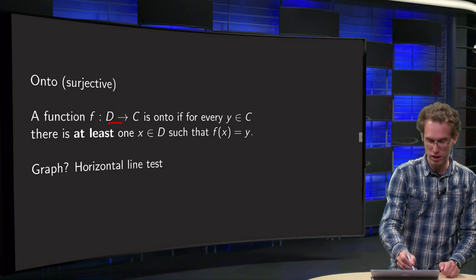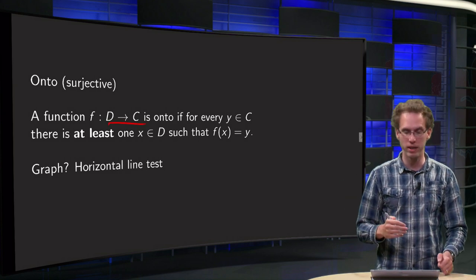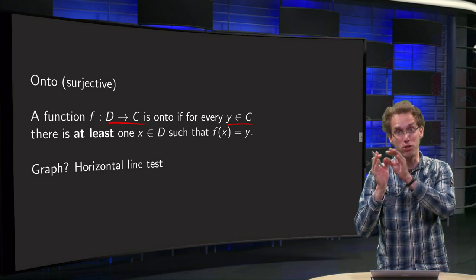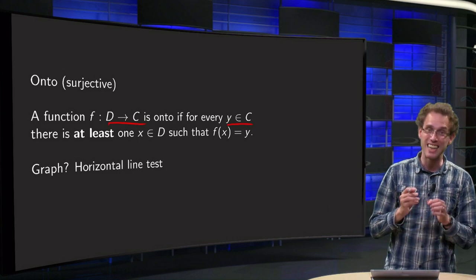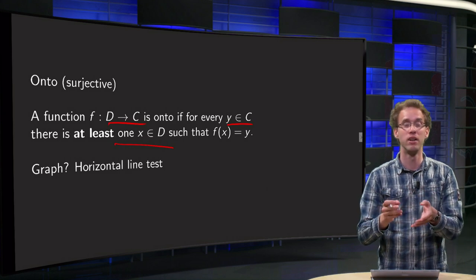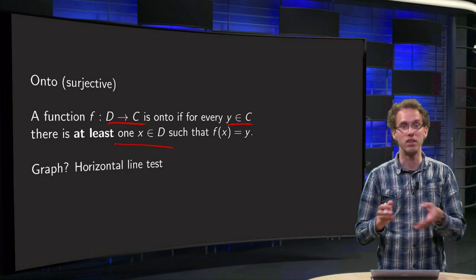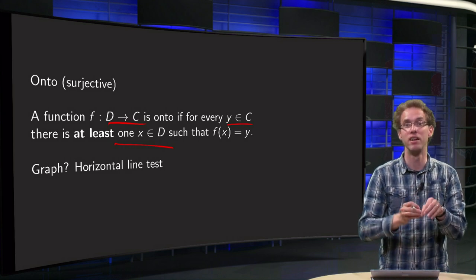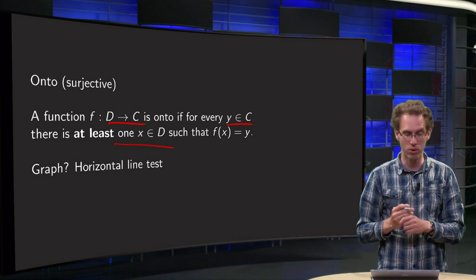A function f from D to C, where D is the domain and C is the codomain, is onto if for every y in the codomain there is at least one x in the domain such that f(x) equals y. You can have more x's, that doesn't matter, but you need to have at least one x in the domain which is mapped to your y in the codomain.